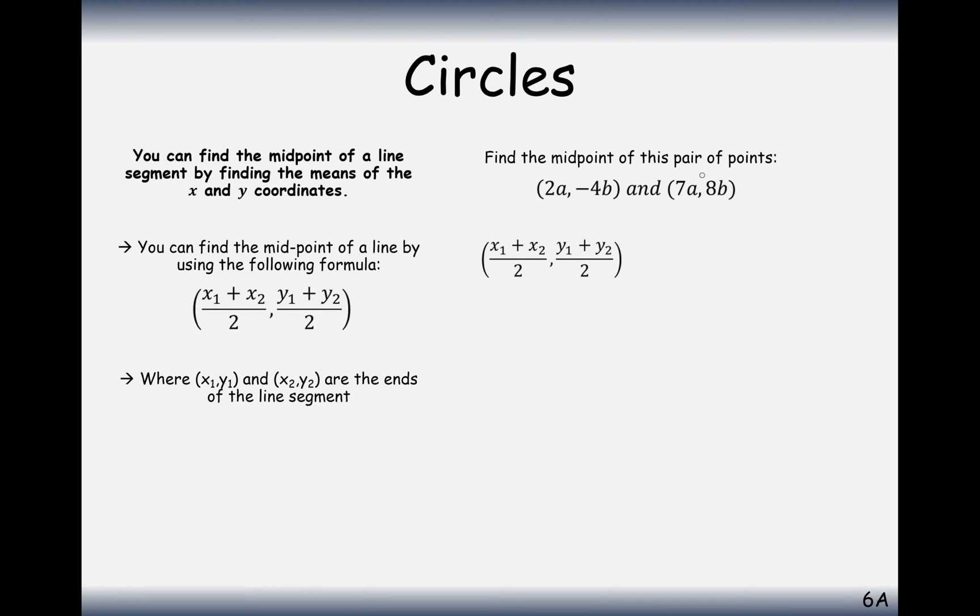Alternatively, they could give you a question with A's and B's in there, but exactly the same thing works. You can see here that if you worked out the middle value in between 2 and 7, you'd get 4.5, and the middle number between minus 4 and 8 would be 2.